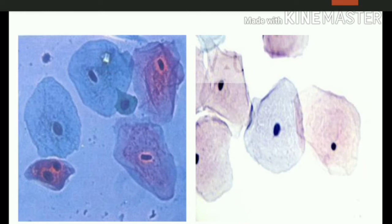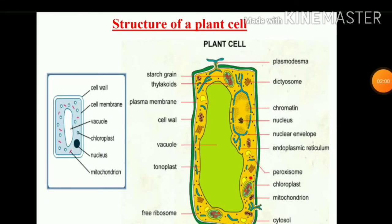In this way we have seen the human cheek cell. Now just observe the structure of a plant cell. Here in this small rectangle, a diagram of the plant cell is given. You are able to identify specifically the cell wall, cell membrane, the big vacuole, chloroplast, nucleus, and the small mitochondria. You are able to identify all these things in the plant cell in detail.